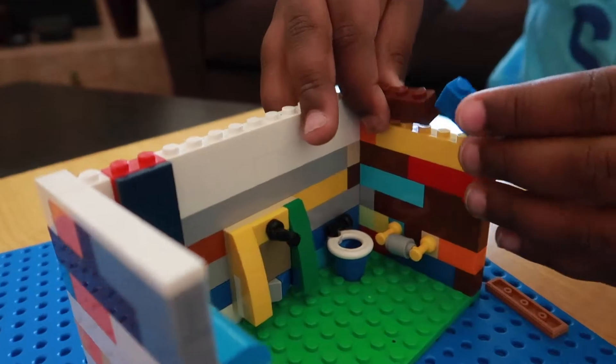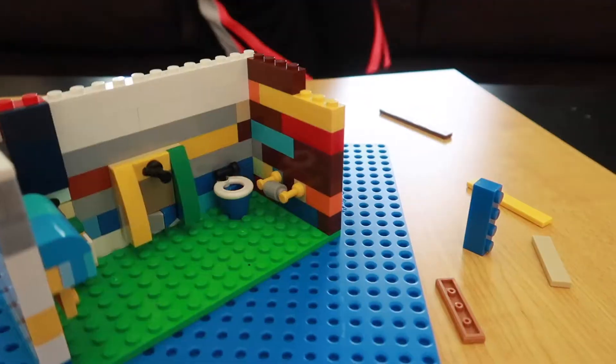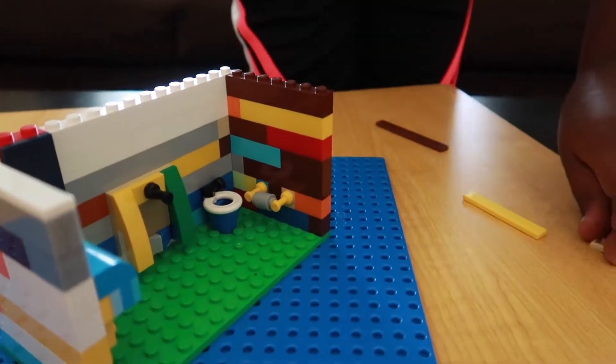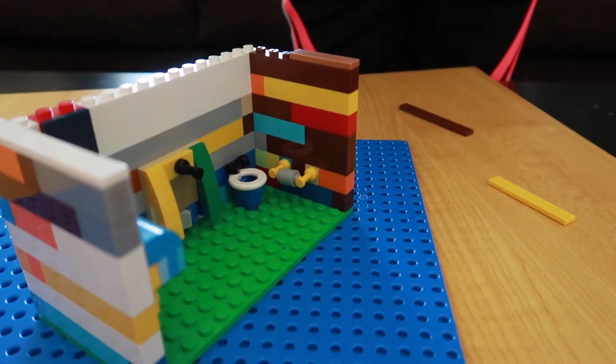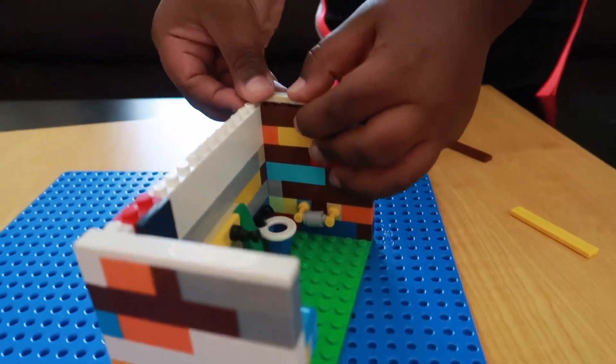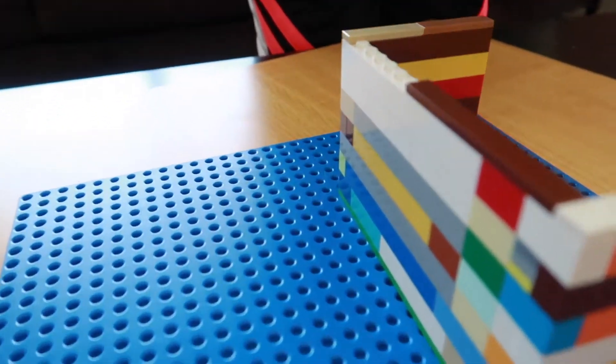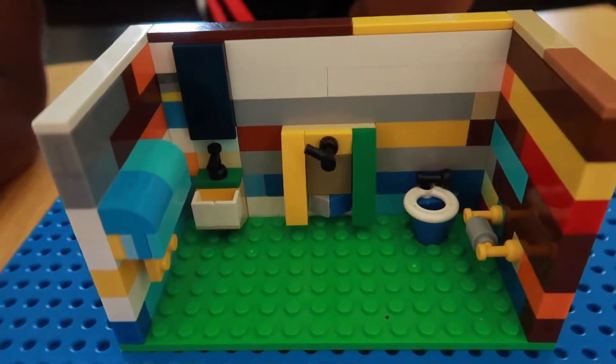Place that right there if you need to. Place these two. Place this one right here. Place this one right here to lock the mirror together. Place this one right here. Place this one right here.